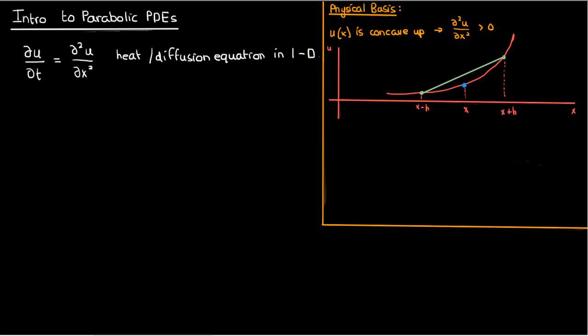Well if I draw a straight line between these two points then the average value of the surrounding points, which is half of u of x plus h plus u of x minus h, is right here in the middle of this line segment. Because the function u is concave up...